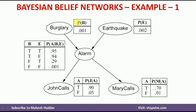The probability of individual events are given: probability of burglary B is 0.001 and probability of earthquake E is 0.002. Similarly, probability of no burglary is 1 minus 0.001, and probability of no earthquake is 1 minus 0.002.